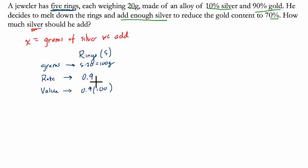So that's for the rings. But then after we take all these rings and melt them down, we've got to add silver. So let's think about that next. So we have our pure silver. And how much do we add? We don't know. That's X. And we already defined the rate here. This is the gold rate. I'll write short gold here. Well, the rate of gold in pure silver is 0. There's nothing there. And the value will be 0 times X.